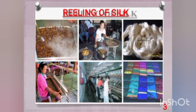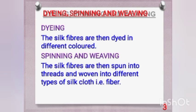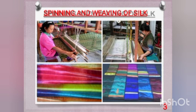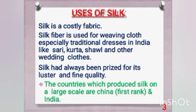In the picture you can see the reeling process. In dyeing, silk fabrics are dyed into different colors, which is how the variety of colored silk clothes available in the market are produced. In spinning and weaving, silk fibers collected from cocoons are spun together into threads and then woven into different types of fabric and clothes.